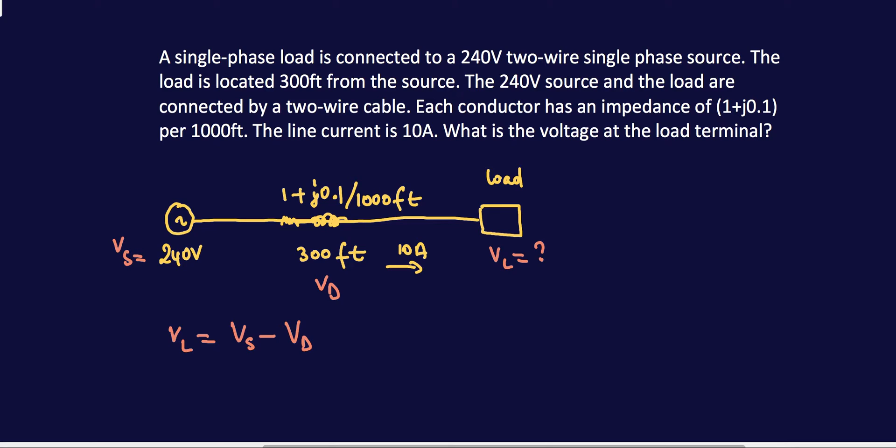So what's the voltage drop across the conductor? Vd is then equal to IR. V equals IR.